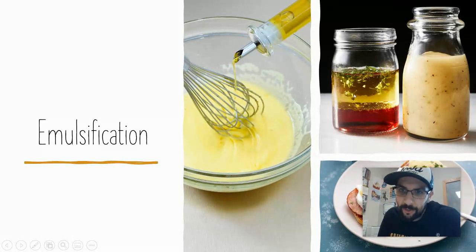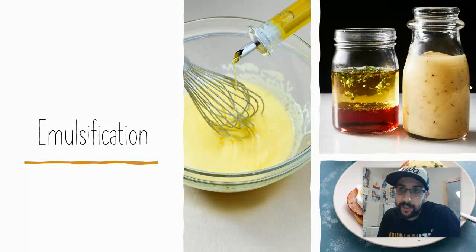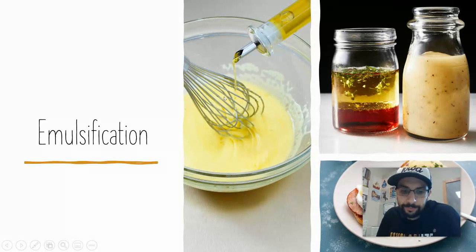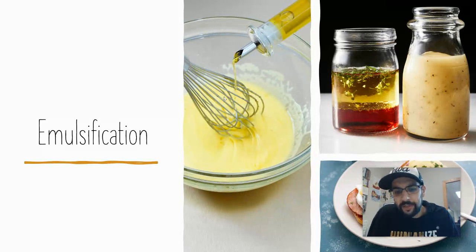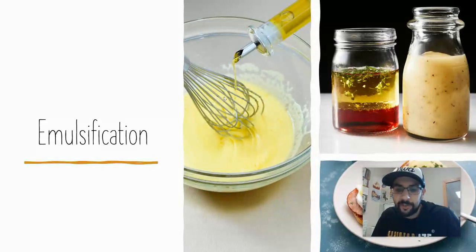An emulsion can be either temporary or permanent. A vinaigrette — oil and vinegar — if you shake it up, you get a temporary emulsion, meaning it will separate over time, but if you agitate it again it comes back together. A permanent emulsion, like mayonnaise, requires an additional ingredient beyond just the oil and water, known as an emulsifier or emulsification agent. That emulsifier attracts and holds together both the oil and the liquid. Common emulsifiers are egg yolks — because they contain a chemical called lecithin — and mustard.